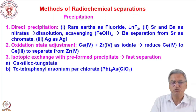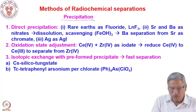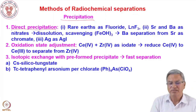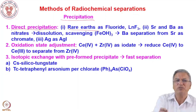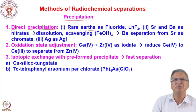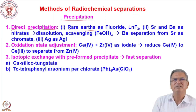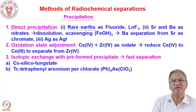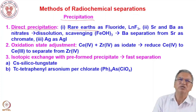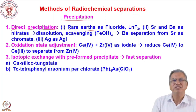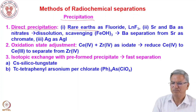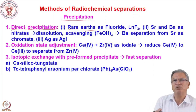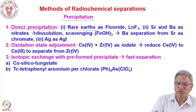Let us discuss some radiochemical separation procedures. First, precipitation can be done in different ways. One is direct precipitation. For example, rare earths are all trivalent — except cerium, which can exist as Ce(IV). Trivalent rare earths can be separated by a cycle of hydroxide followed by fluoride precipitation. Fluoride precipitates of rare earths are clear cut — very fine, low volume. Only zirconium may interfere, so you can do steps of fluoride and hydroxide precipitation, or use complexing agents that keep one metal ion in solution while others remain in the precipitate.